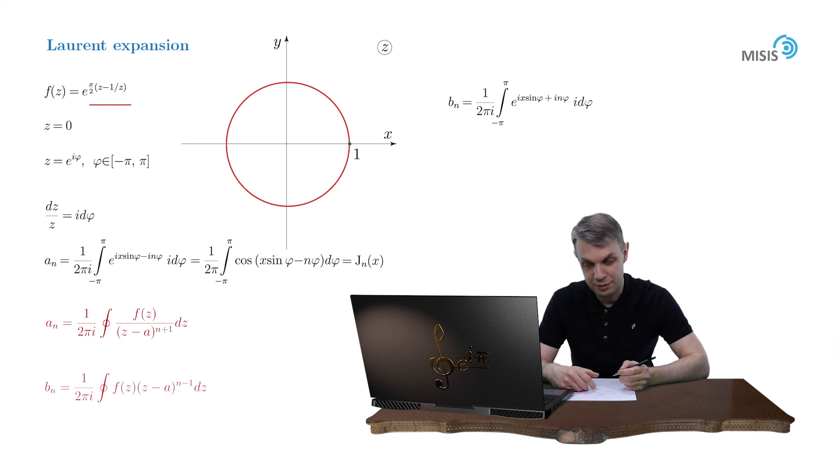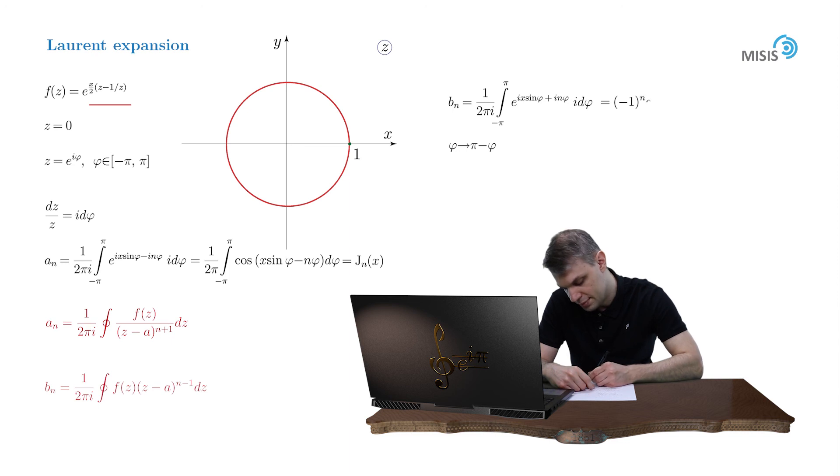But quite surprisingly, this integral can be reduced to the previous integral by a simple change phi to pi minus phi. And once we use the periodicity of the integral, we immediately obtain that it's equal to negative 1 to the power of n times a n.